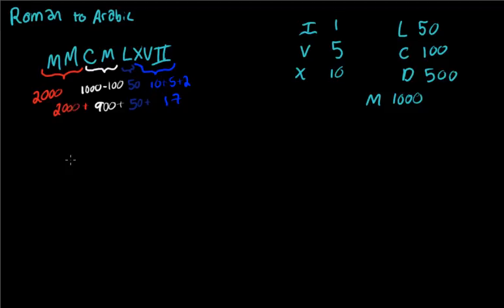Well, what would that be? That would be 2,957. Or I'm sorry, 2,967. I forgot to carry this one over. So MMCMLXVII is equal to 2,967.